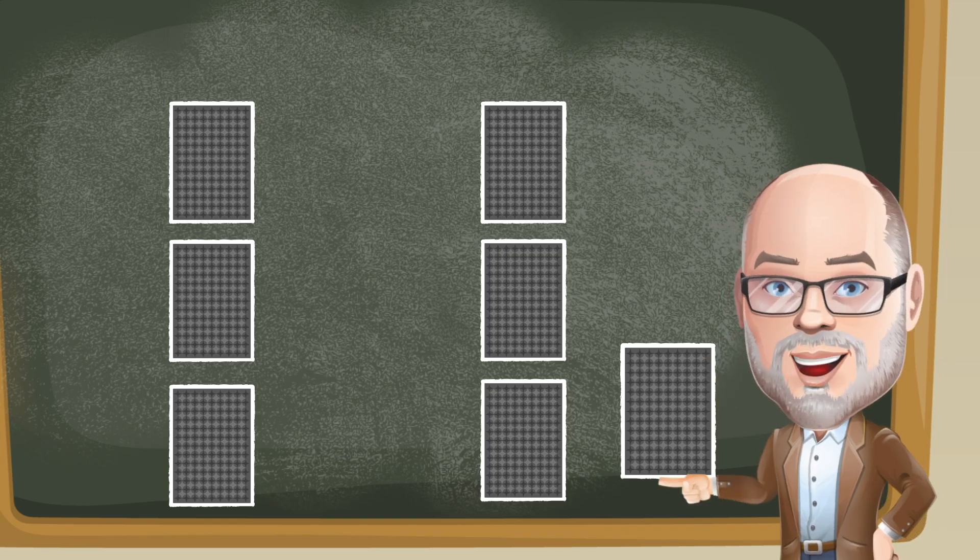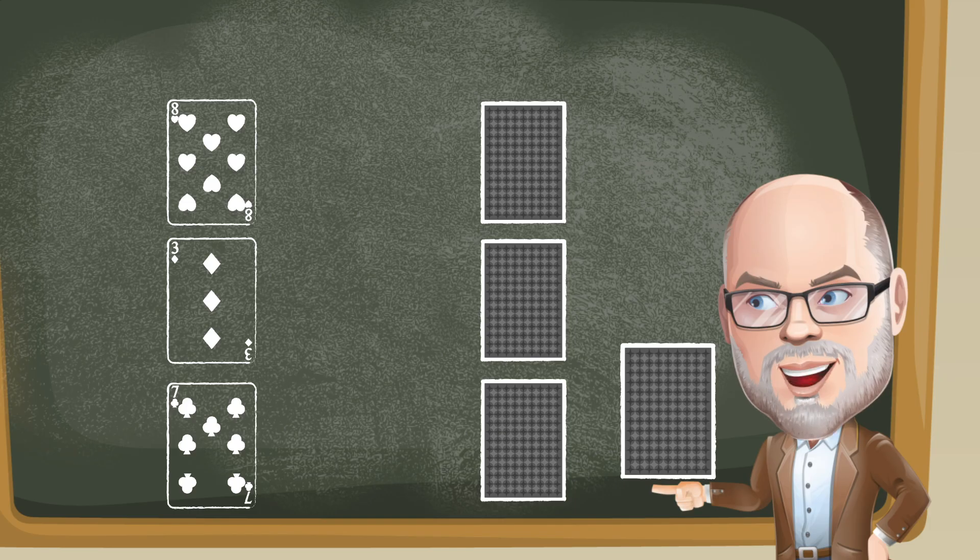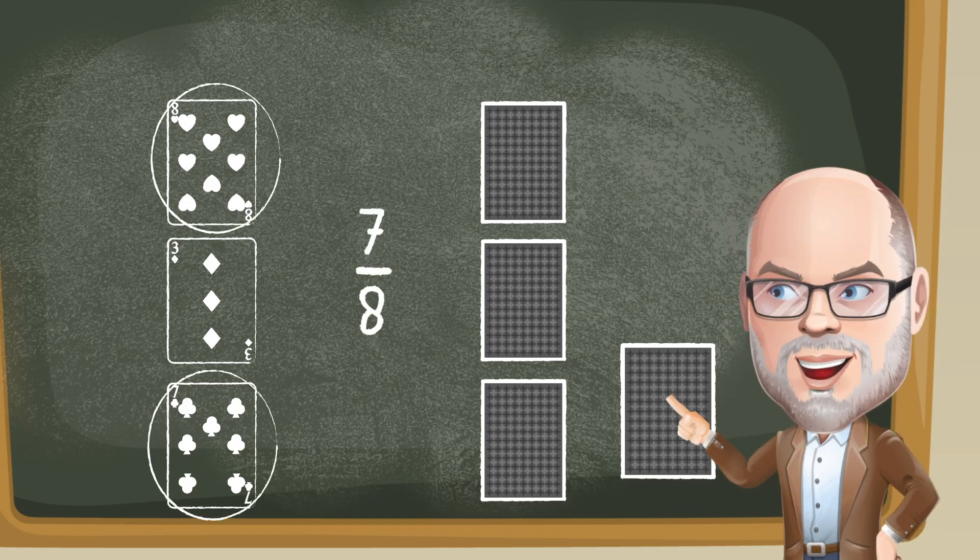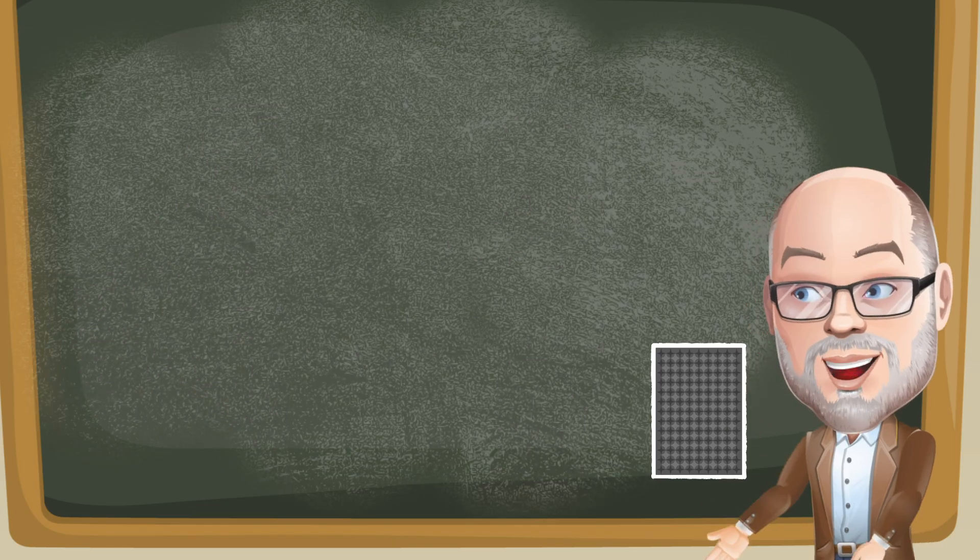So a player who flips over an eight, a three, and a seven would use just the seven and the eight to make seven eighths. But in this version, the player wins the round and they get all six cards.